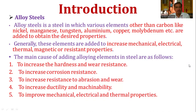Generally, these elements are added to increase the mechanical, electrical, thermal, magnetic, or resistance properties. The main causes of adding alloying elements in steel are as follows. The first objective is to increase the hardness and wear resistance property.